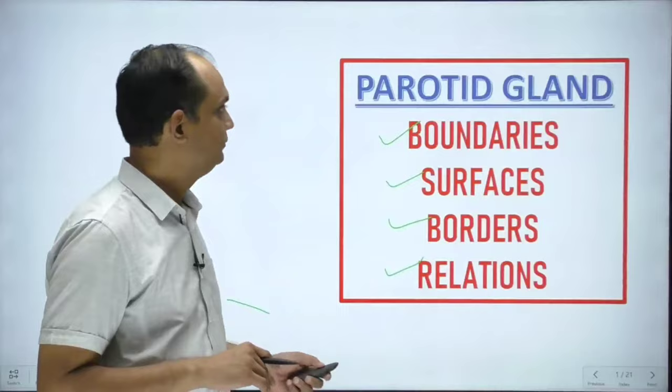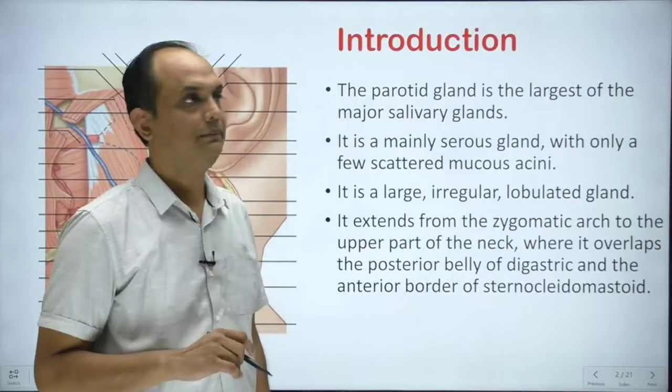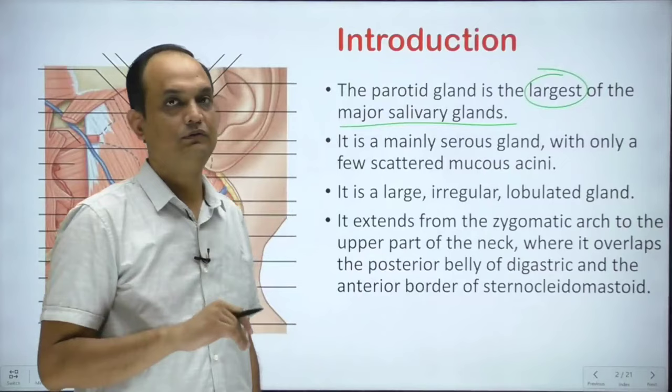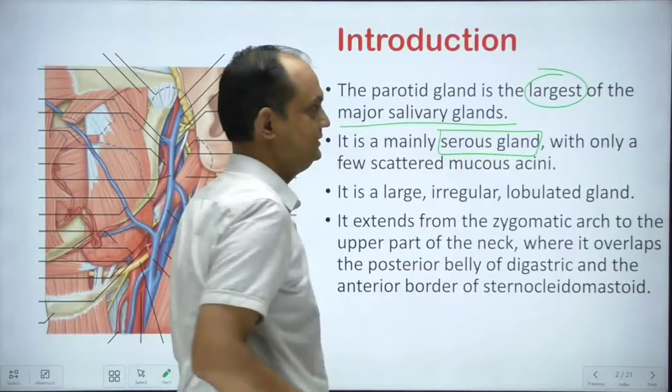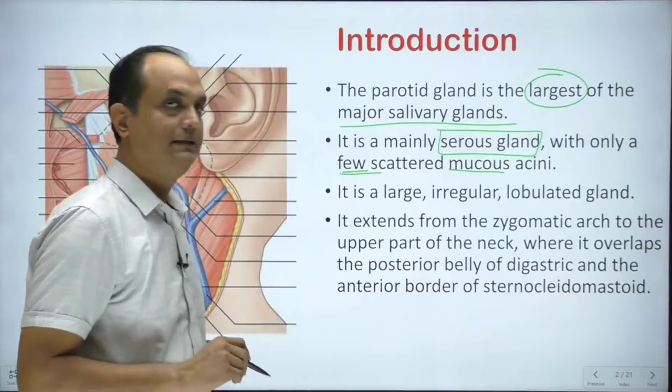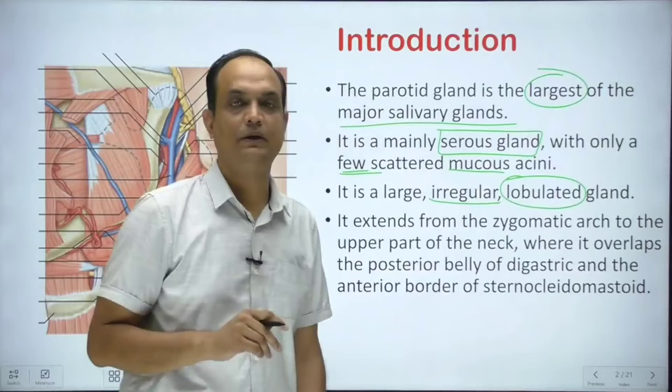What is the introduction of the parotid gland? Whenever we talk about the parotid gland, it is the largest salivary gland. We have three salivary glands: parotid gland, submandibular gland, and sublingual gland. Out of these, the parotid gland is the largest and it is mainly serous in nature. The secretions coming out from the parotid gland are watery in nature, having very few mucus acini. This gland is irregular in nature and when you do the dissection, you will realize that the outer surface is lobulated.